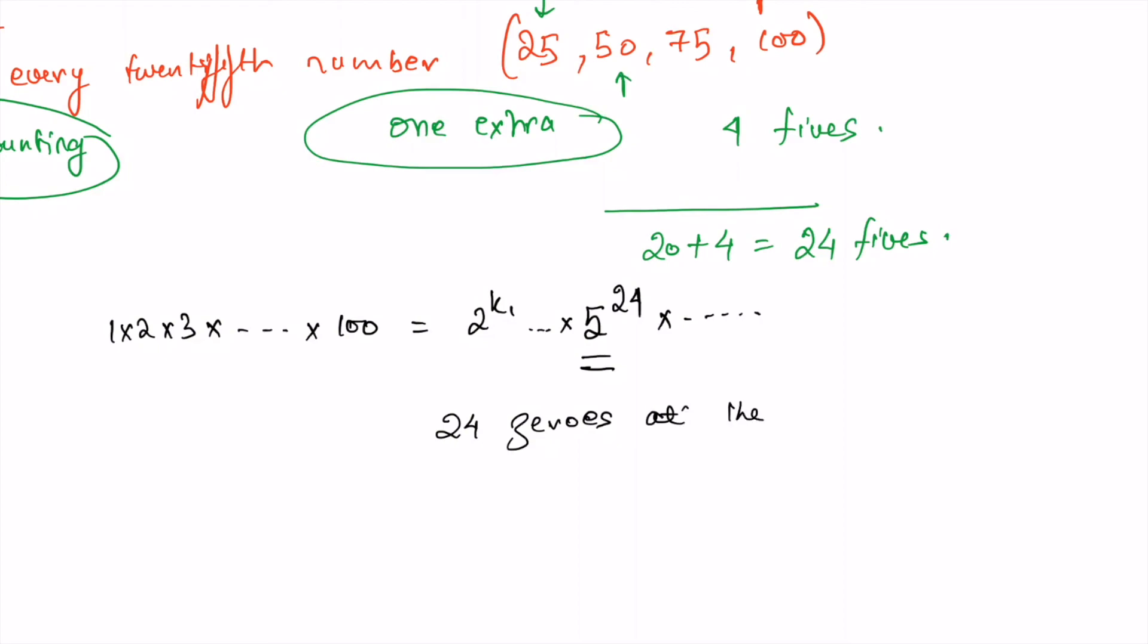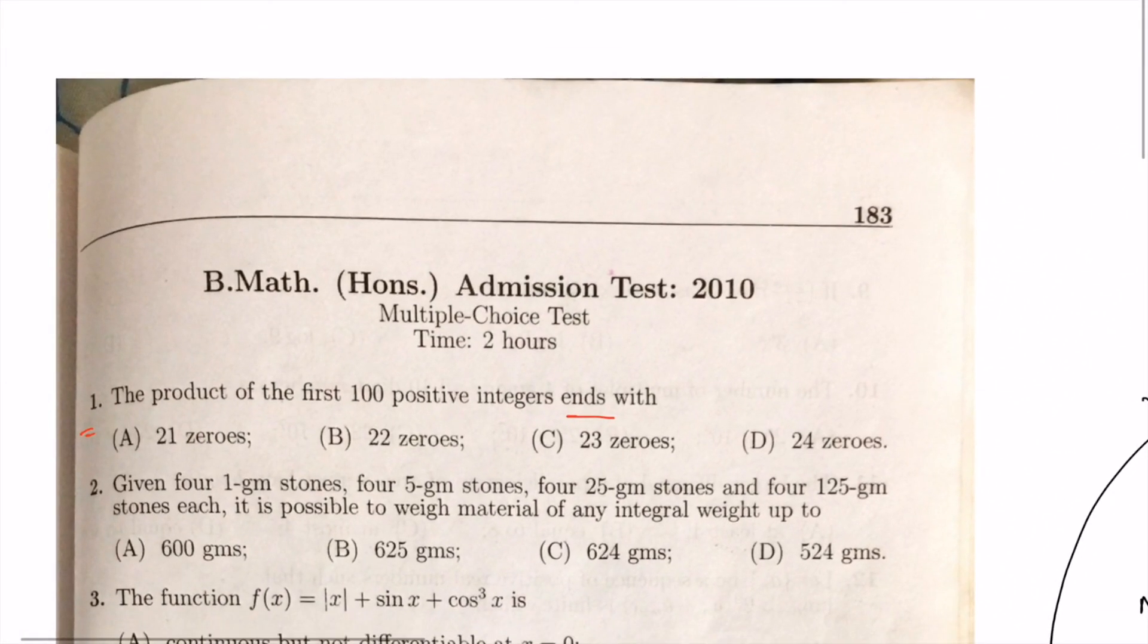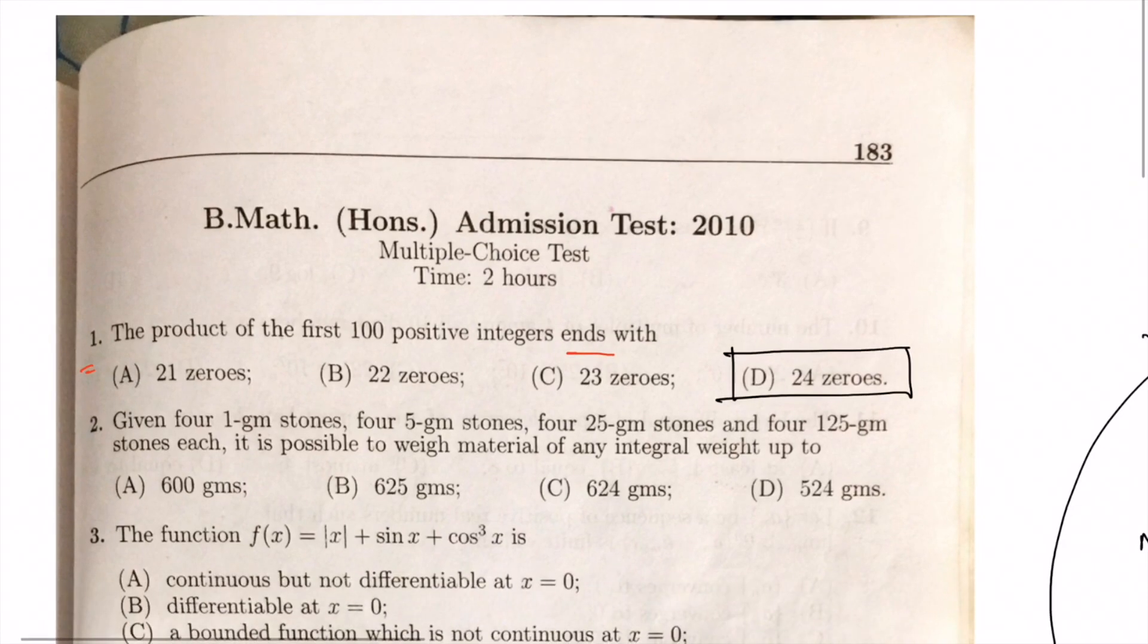So let's come back to the problem. The correct answer would be D, which is twenty-four zeros. Thank you.